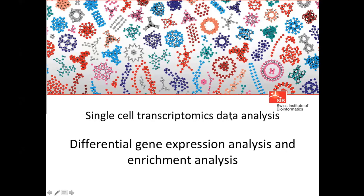We will look at differential gene expression analysis and also enrichment analysis. Once we have identified different cell types and are happy with our clustering, we want to start seeing which genes are differentially expressed between different conditions, and also identify marker genes that are more expressed in one cell type compared to the other. Once we have a list of genes, we want to annotate them and see what functions they're involved in — so we'll do enrichment analysis.